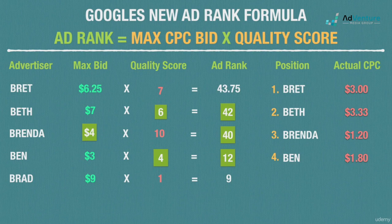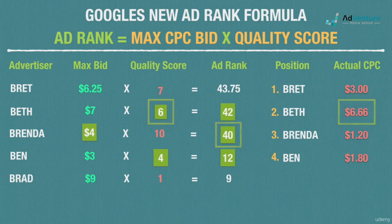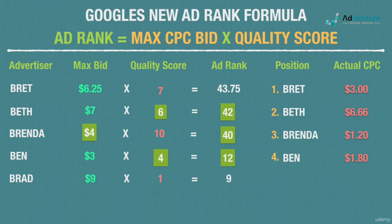But did anything happen to the other advertisers? Yes — Beth can no longer just pay $3.33 to beat Brenda. Dividing Brenda's new ad rank of 40 by Beth's quality score of 6, Beth's actual CPC jumps back up to $6.66. And if Beth raised her max CPC bid to $5, giving an ad rank of 50, she'd automatically take the top spot and all the other advertisers' CPCs would need to be recalculated.